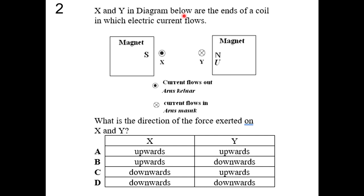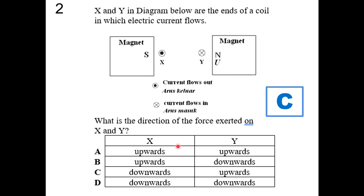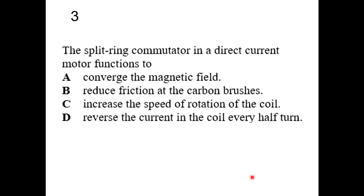Question 2: XY are sides of a coil carrying current. X has a dot symbol (current out) and the other has X symbol (current in). Using Fleming's left-hand rule for each side, the answer is C — X moves downward and Y moves upward.